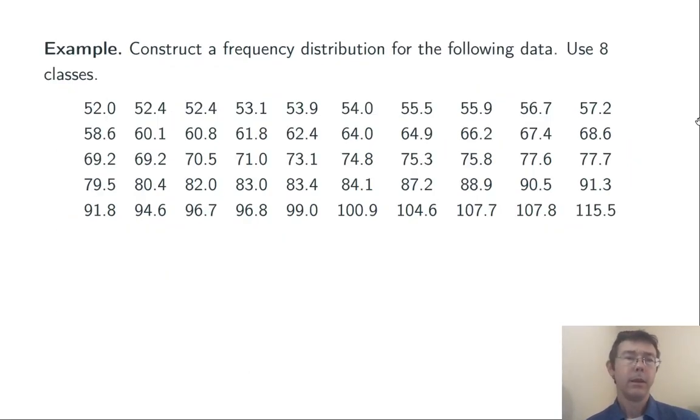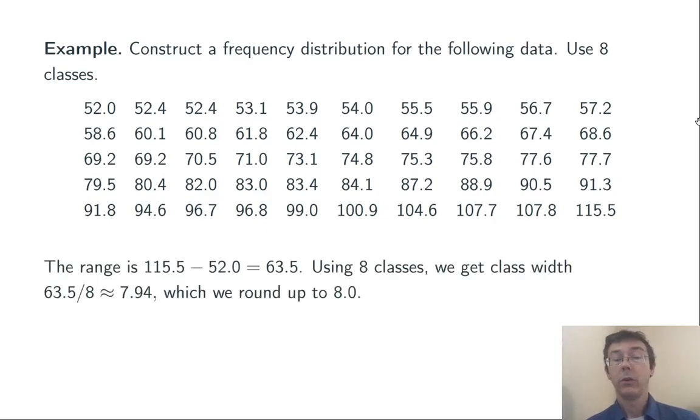Here's a full example. Construct a frequency distribution for the following data using eight classes. So, the range here is 115.5 minus 52.0, or 63.5.